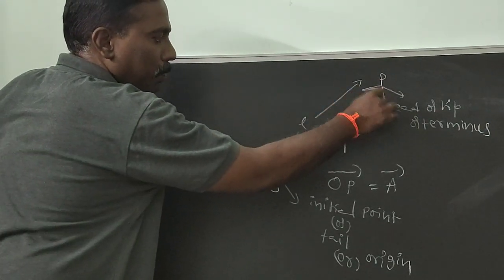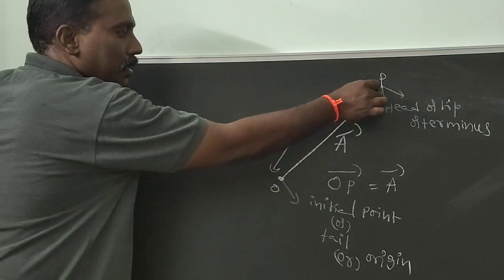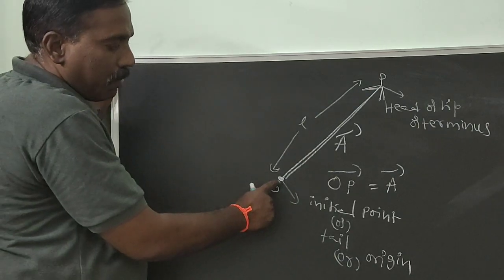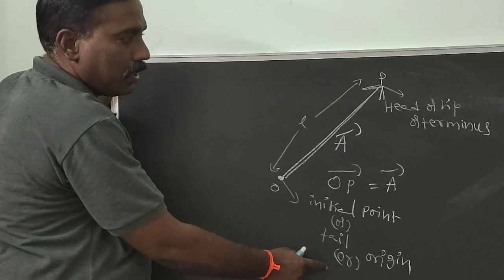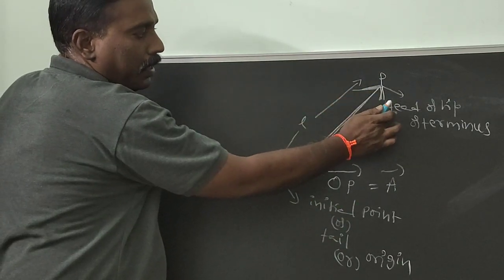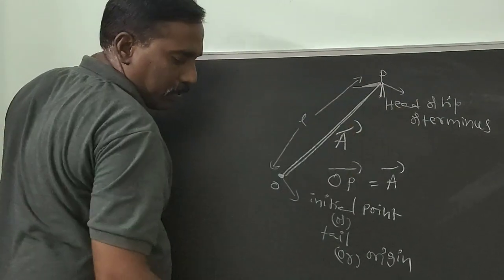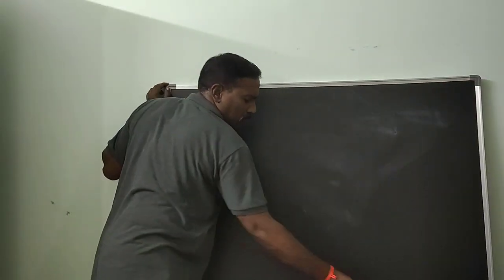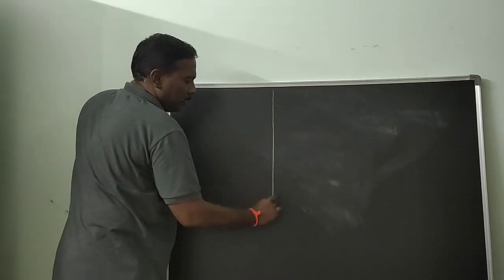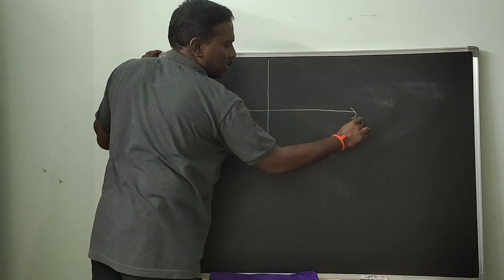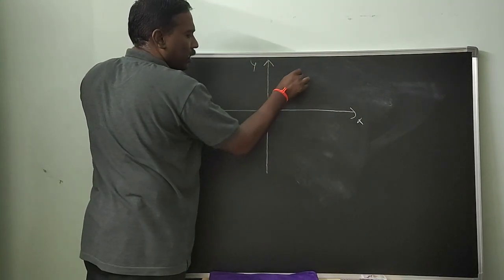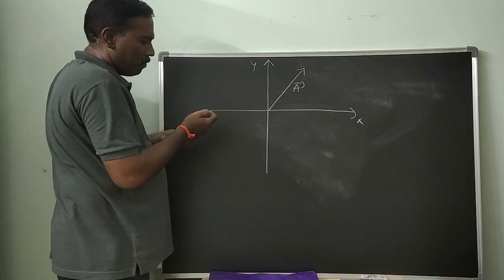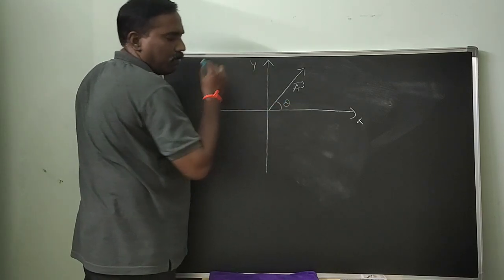Point P is known as the head, or tip, or terminus of the vector. The arrow mark represents the direction of the vector. Now, for the resolution of the vector: suppose a vector A-bar makes an angle theta with the x-axis.